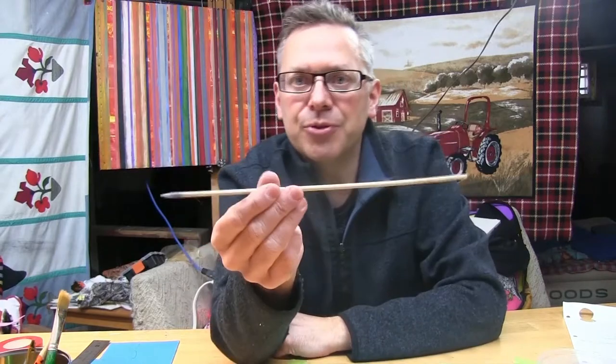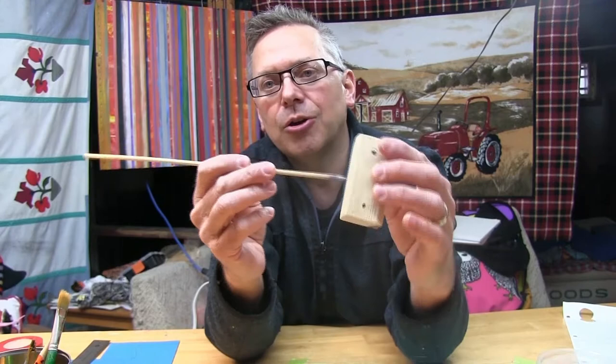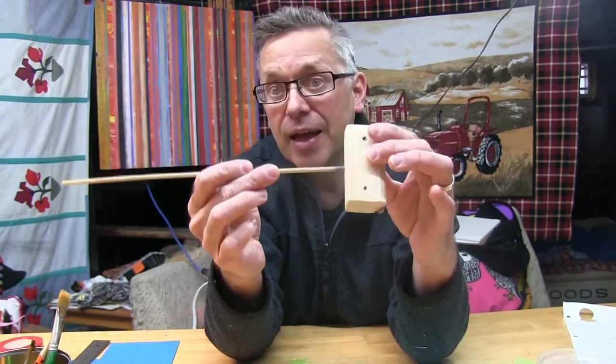We're going to need a bamboo skewer. We want the skewer to fit into one of the holes in the back, slightly larger hole there. We're going to glue that in place with wood glue. A couple of paintbrushes. I think we're ready to start. Here we go.